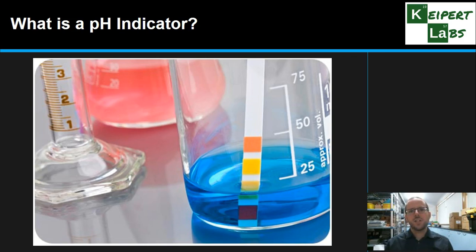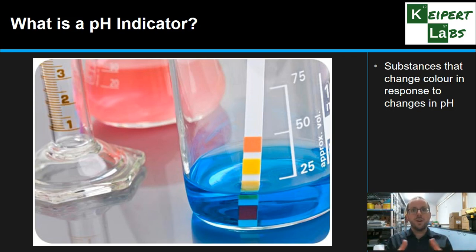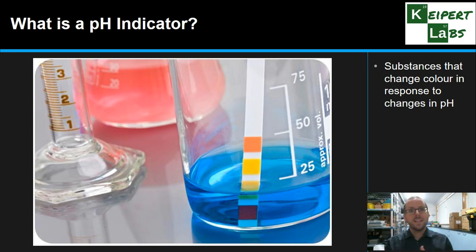So what is a pH indicator? A pH indicator is a substance, a compound that changes colour in response to a change of pH, or to a certain level of pH. pH is a measure of how acidic or basic a solution is, and so when the solution changes from acid to base or vice versa, that indicator will change colour.